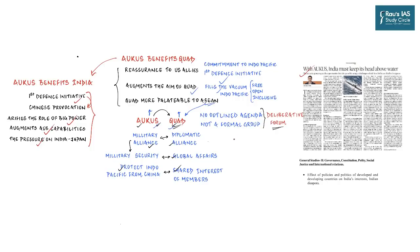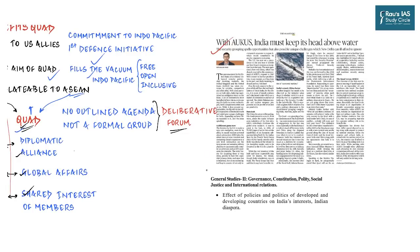A lot of commentaries have focused on comparison of AUKUS and QUAD: the key differences between them, how AUKUS is going to impact the functioning of QUAD, how it can embolden QUAD, and how AUKUS is going to impact India and its interests in the Indo-Pacific region. This topic falls under GS Paper 2, specifically the effect of policies and politics of developed and developing countries on India's interests.